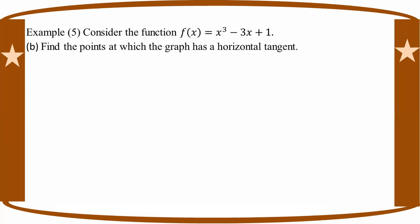Now find the points where the graph of the curve A cubed minus 3A plus 1 has a horizontal tangent. Let's find the horizontal tangent. We need the horizontal tangent, which means the gradient equals zero.